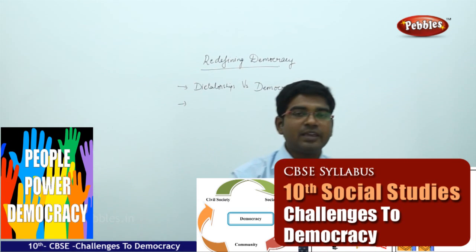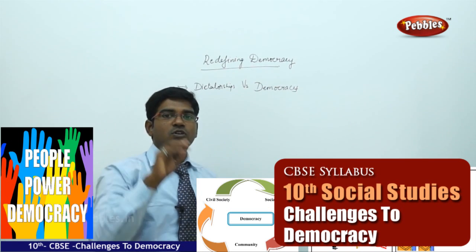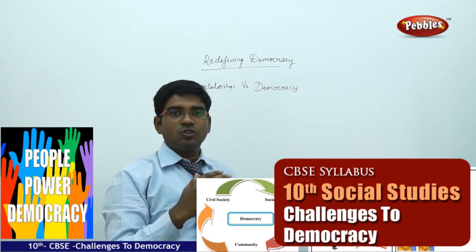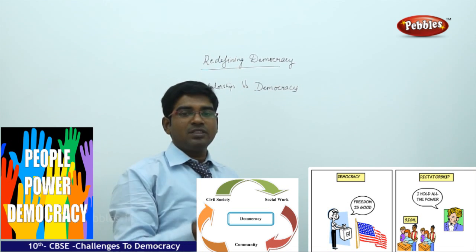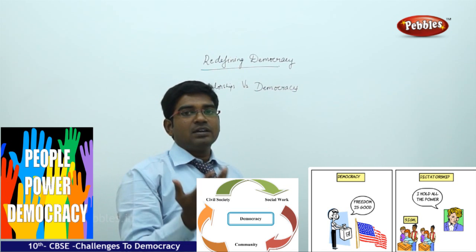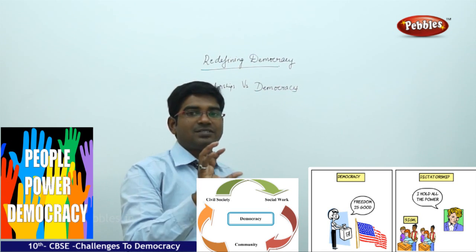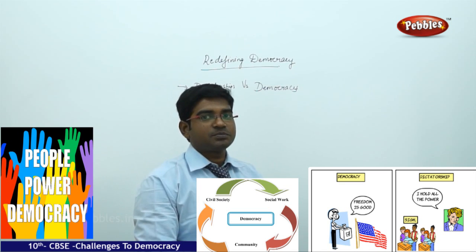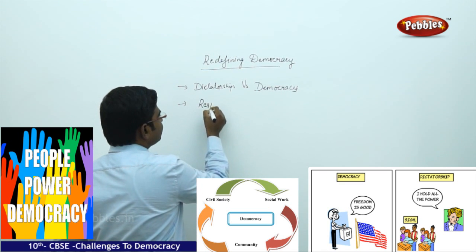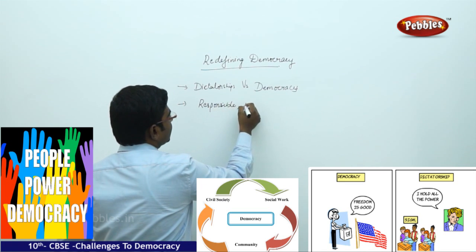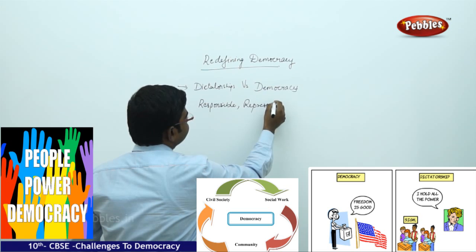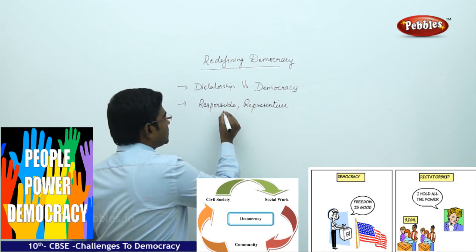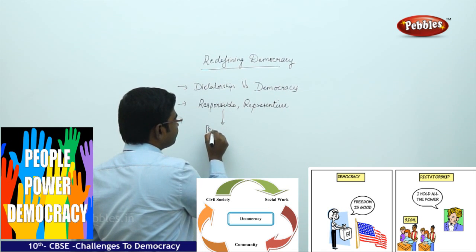Once we understood clearly that dictators cannot be further accepted, because in modern days we need to understand that everything that happens should be for the benefit of the people. So today, governments should run with the guiding principle of being responsible and taking care of people, or trying to do the best for the people. Responsible for whom? Responsible for people.